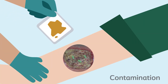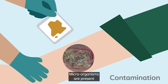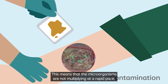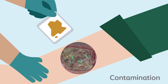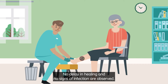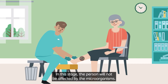Stage 1: Contamination. Microorganisms are present within the wound but are not proliferating — meaning they are not multiplying at a rapid pace. No delay in healing and no signs of infection are observed. In this stage, the person will not be affected by the microorganisms.